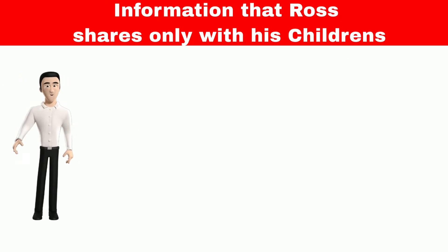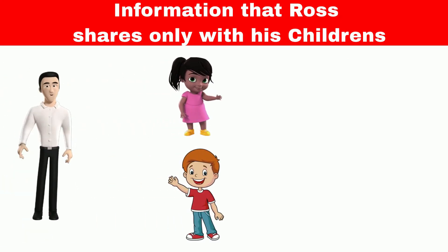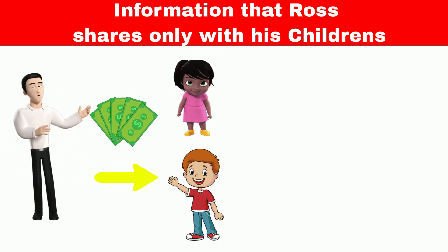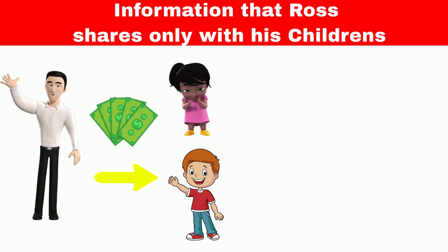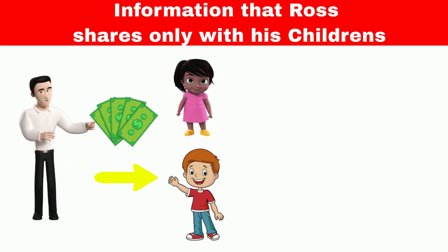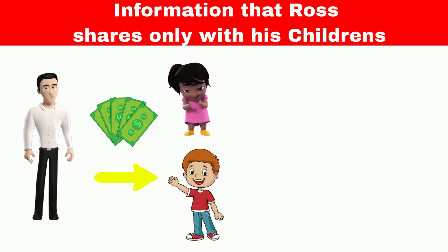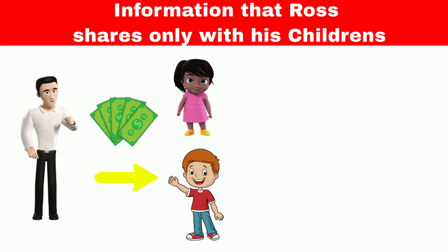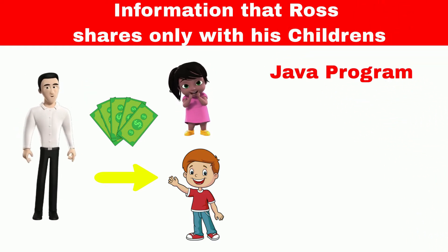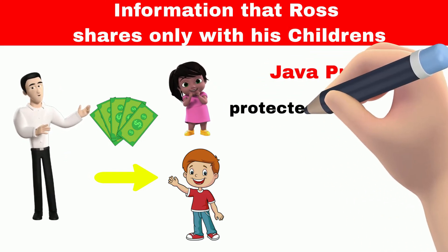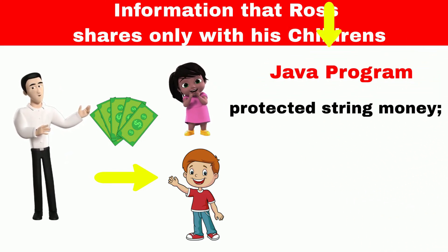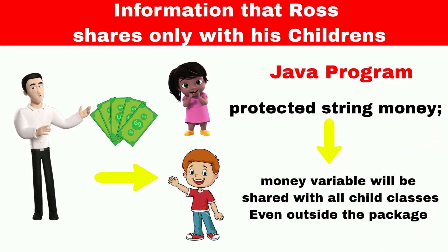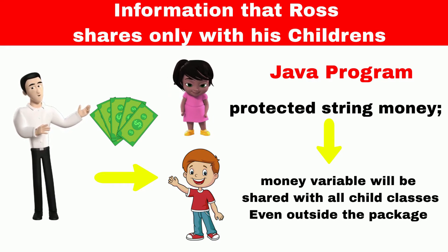Coming back to Ross, some information Ross only shares with his children, like information about his money. Ross has a lot of money, so information about money — like how much money he has and where the money is stored — is shared only with his children, regardless of whether his son lives in his house or not. Similarly, in a Java program, information that we want to share only with child classes will be declared as protected. If we use protected with any variable, that variable will be shared with all child classes — that is, all classes which are inherited from the parent class — even if the child class is in a different package. So the protected keyword is used to restrict information to child classes.